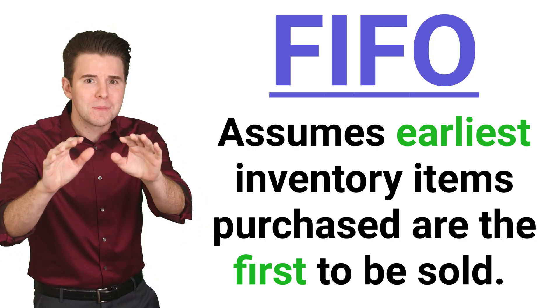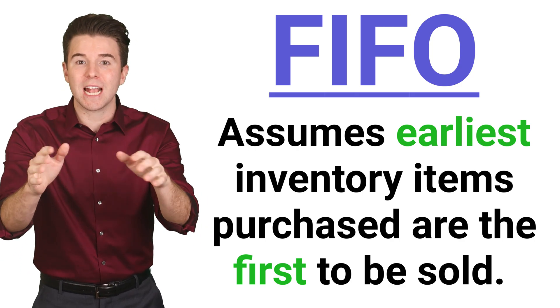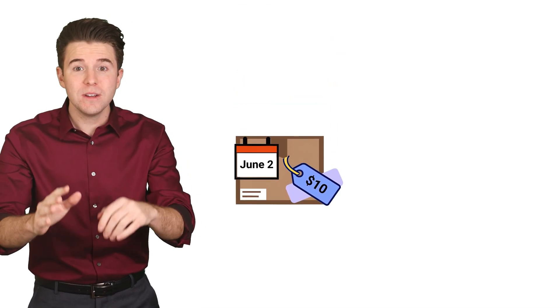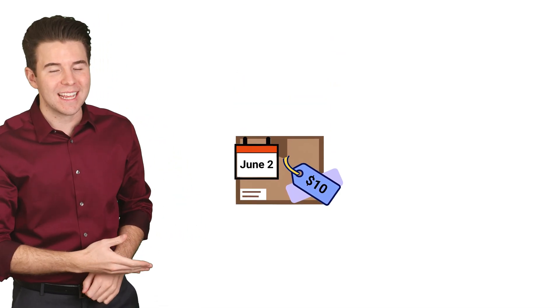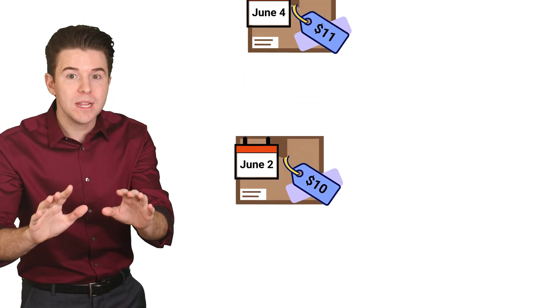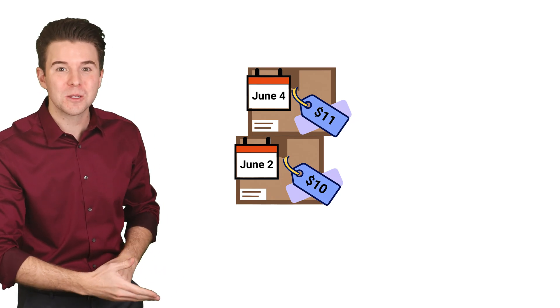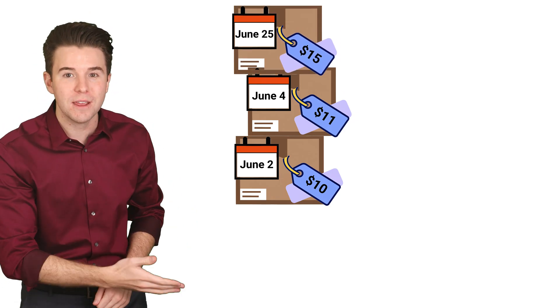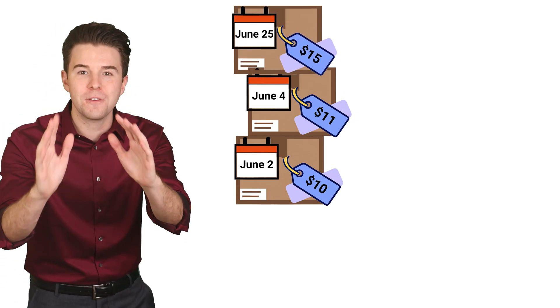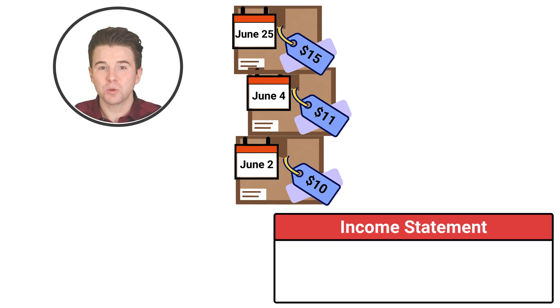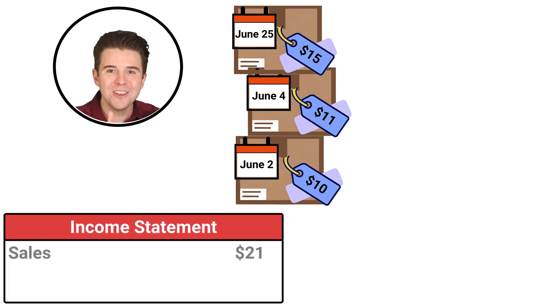For example, let's say a company bought three identical units of inventory: one unit on June 2nd for $10, one unit on the 4th for $11, and one unit on the 25th for $15. On June 28th, we sold one unit for $21.